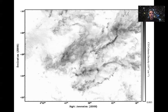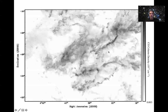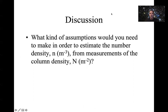As a discussion exercise, have a think about what assumptions you would need to make to estimate the number density — the number of particles per cubic meter, the physical property we really want — from measurements of column density, which is just per meter squared. In the context of this image, how could we turn a column density map into an estimate of the volume number density in certain regions under certain assumptions? I'll leave you to think about that for five minutes and then we'll come back and continue.